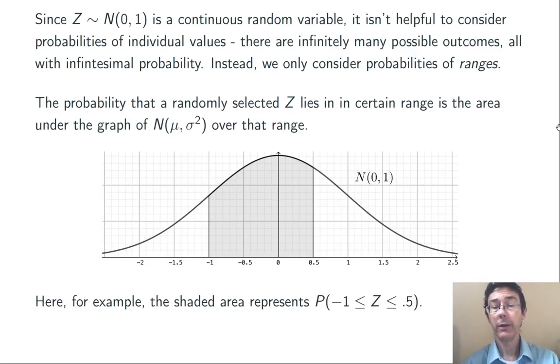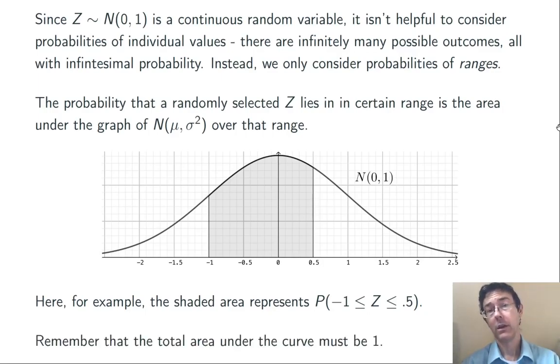So, here I've drawn the probability that z randomly comes out to be between -1 and 0.5. We're looking for the shaded area under the graph between those two values. Of course, remember the total area under the graph is always going to be 1. That's true for a normal distribution or for any other continuous random variable, because the total probability should be 1.